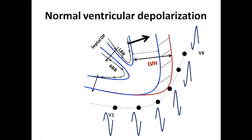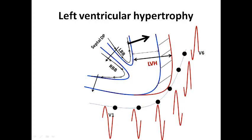What if the left ventricular wall is much thicker than normal, leading to left ventricular hypertrophy? Septal depolarization would remain the same, but left ventricular depolarization would be much more exaggerated, leading to accentuation of the negative component in V1 and accentuation of the positive component in V6. The other chest leads would also be accentuated. So the effect is seen mainly as a deep S-wave in V1 and a large R-wave in V6.